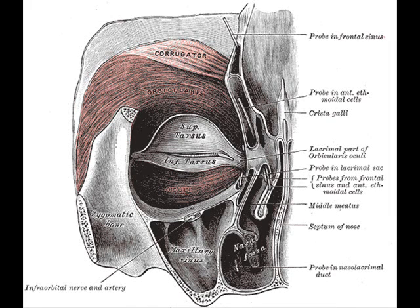It arises from the nasal part of the frontal bone, from the frontal process of the maxilla in front of the lacrimal groove, and from the anterior surface and borders of a short fibrous band, the medial palpebral ligament.